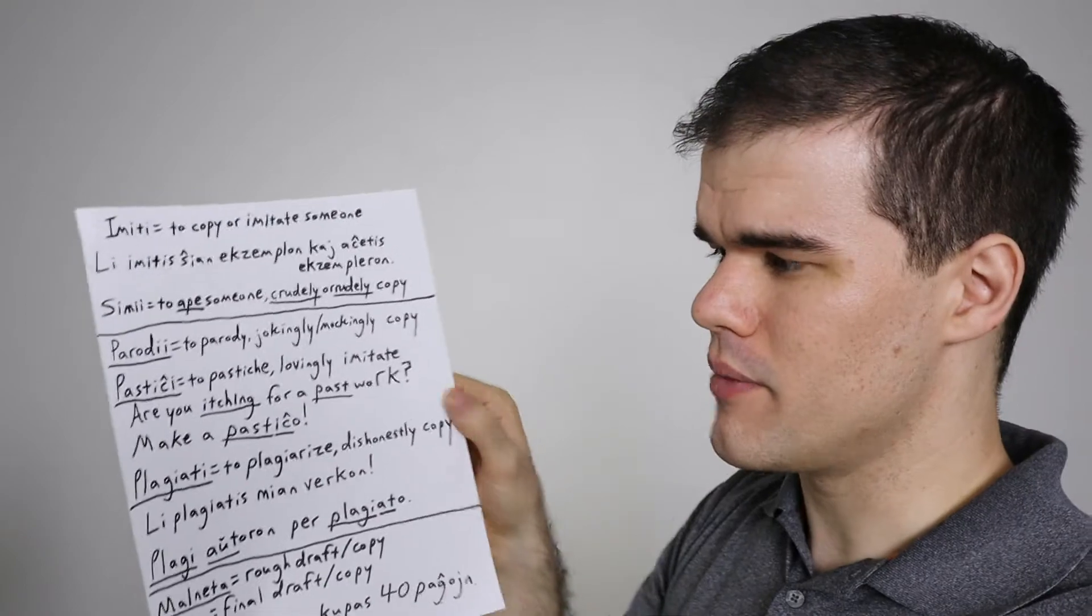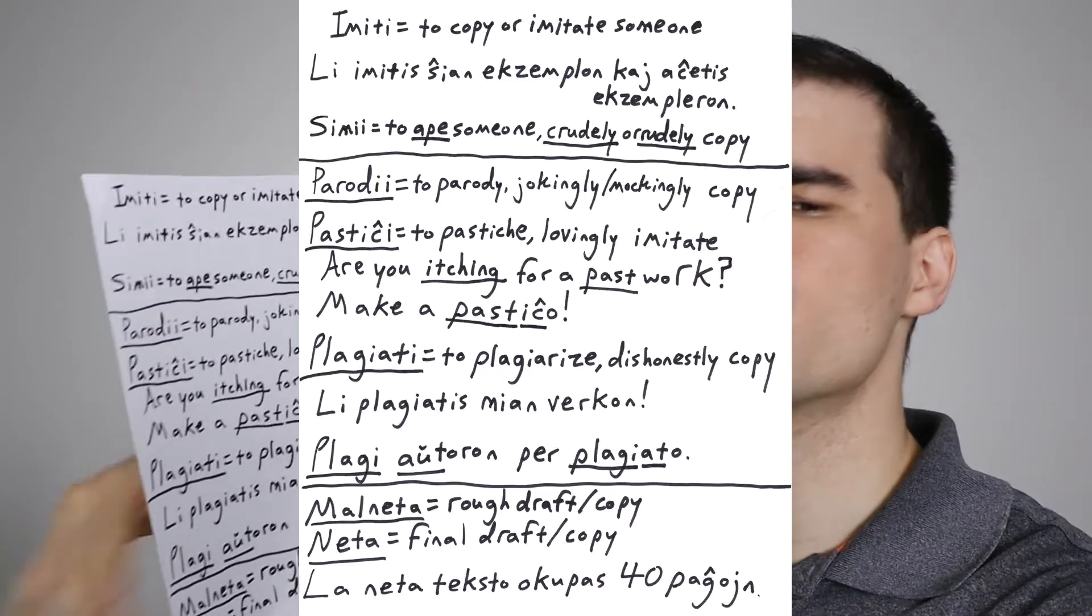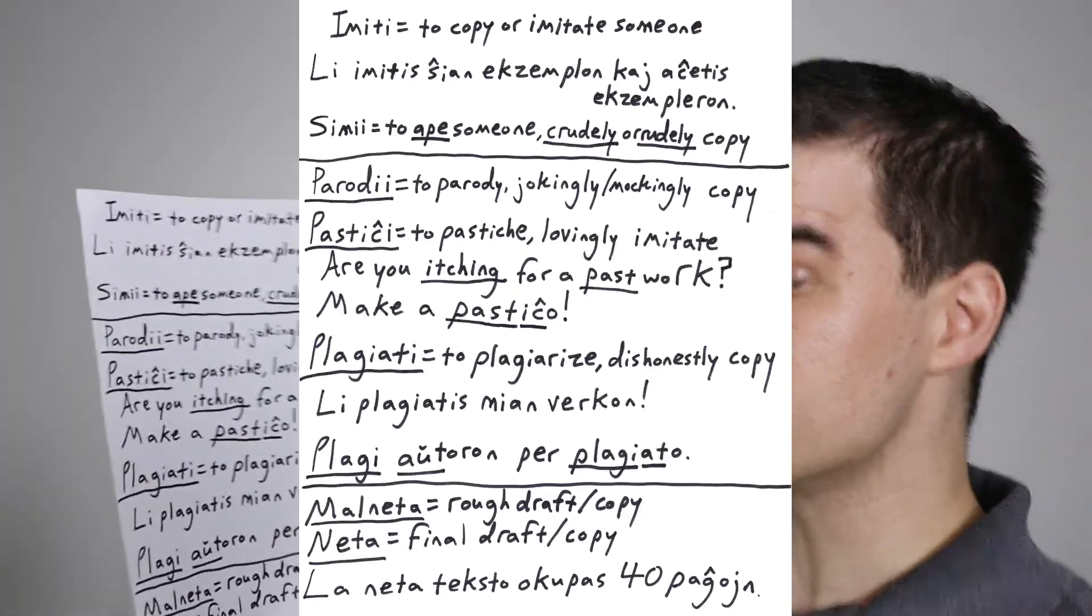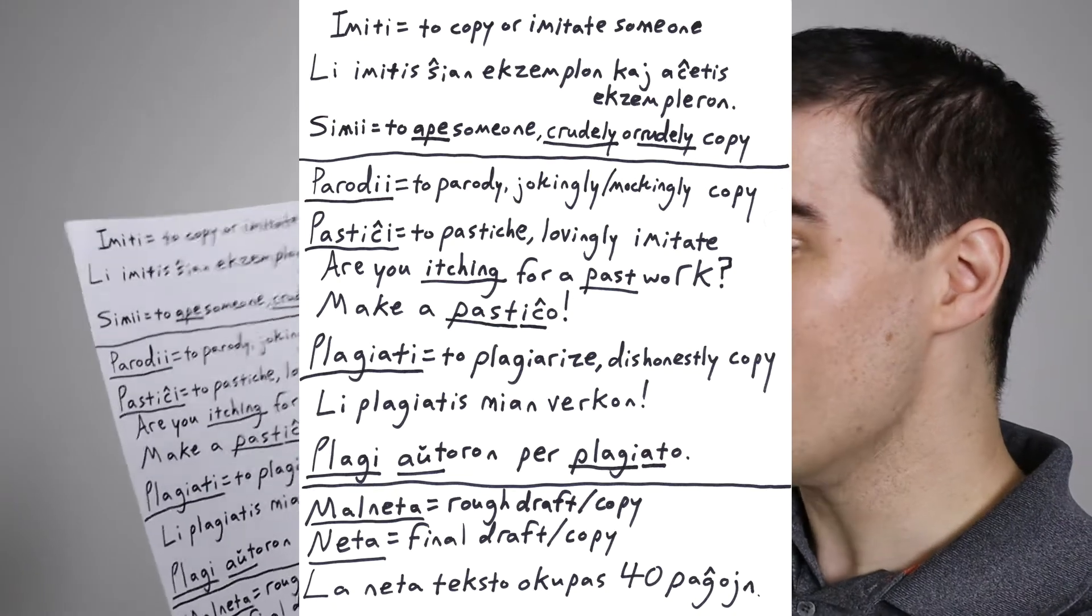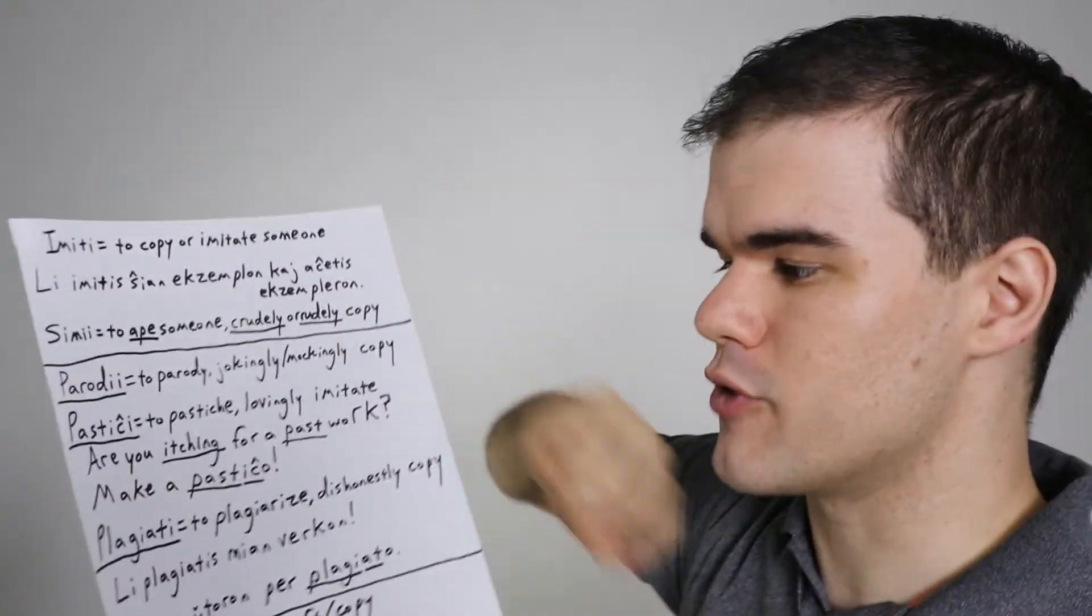Next, we have a very rare one probably for most of you, to pastiche. Pastiche is to lovingly or honoringly imitate something, sort of an homage you'd make. Let's say you love the stories of Sherlock Holmes, and you've studied them so well that you're actually able to write a Sherlock Holmes novel of your own in the style of Arthur Conan Doyle himself. That would be a pastiche. You're doing your own kind of take on that author. And a way to remember, pastiche is the word for pastiche, are you itching for a past work or for more of a past author? Itching for a past thing? Make a pasticho. Itching for the past? Pasticho. It sates that nostalgia that you might have for a particular author.